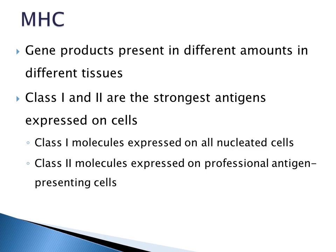The gene products of the MHC are present in different amounts in different tissues. Class 1 and 2 are the strongest antigens expressed on cells. Class 1 molecules are expressed on all nucleated cells, and class 2 molecules are expressed on professional antigen presenting cells.